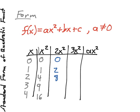3 squared is 9 times 2 is 18, and 4 squared is 16 times 2 is 32. And of course, if a was negative, these would all be reversed, or their additive inverses.